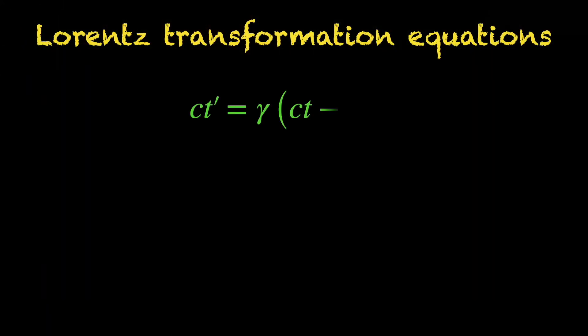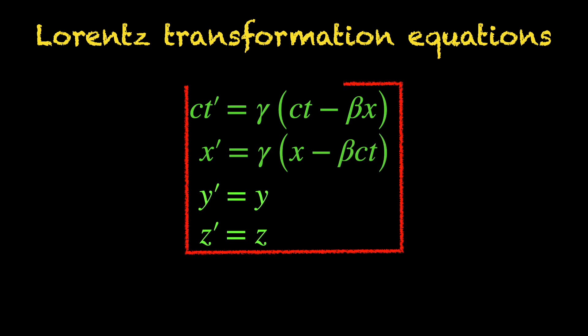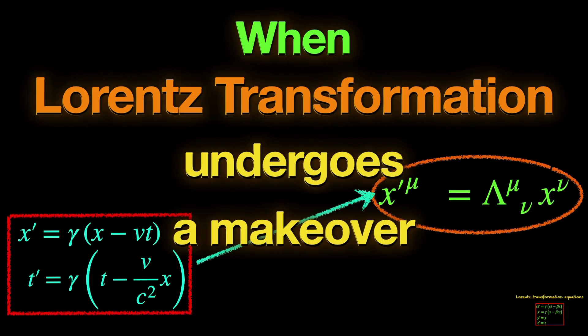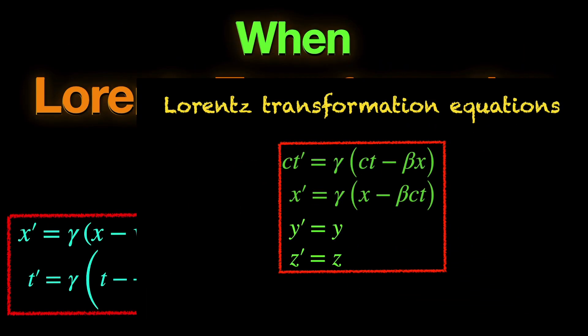These are four equations that connect the two sets of space-time coordinates of a given event P as measured in two different inertial frames. Hopefully, you already know what the symbols mean mathematically and physically. If not, you can watch a video I posted a few days back. The link is in the card and description.